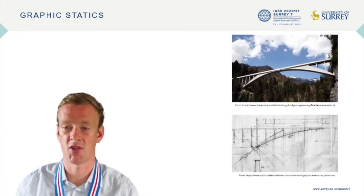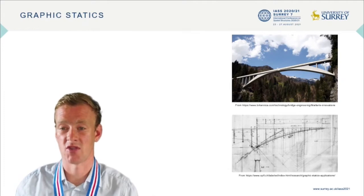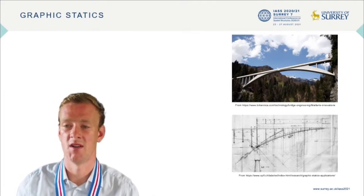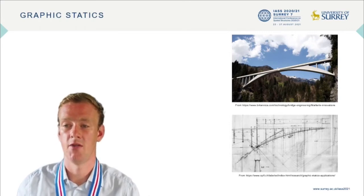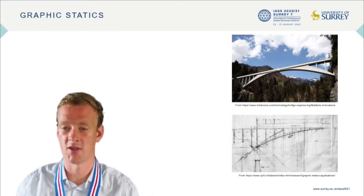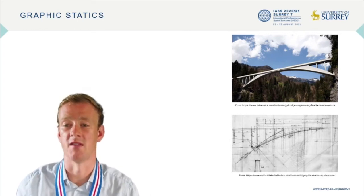Graphic Statics relies upon two reciprocal figures: the form diagram, which describes the structural geometry, and the force diagram, which describes the forces within the structure. It is possible to manipulate either and then observe the impact on the other. The forces are closely related to a discrete area stress function over the form diagram, which can also be designed.